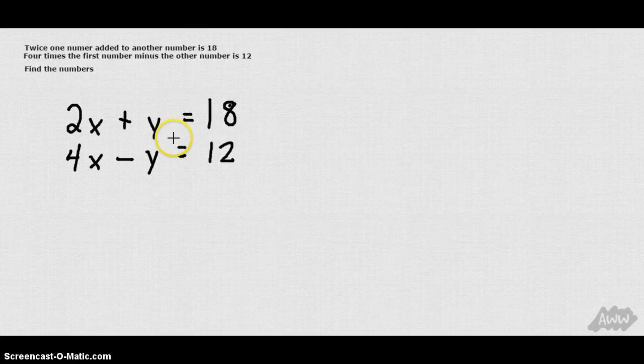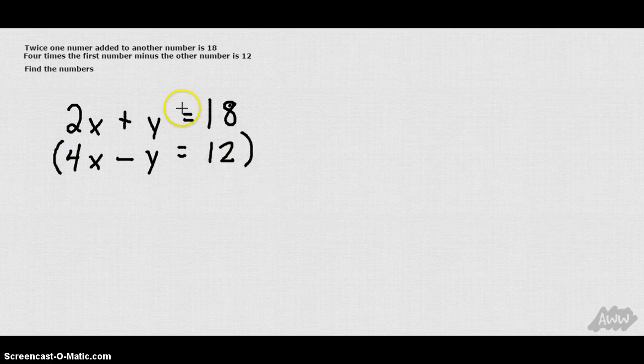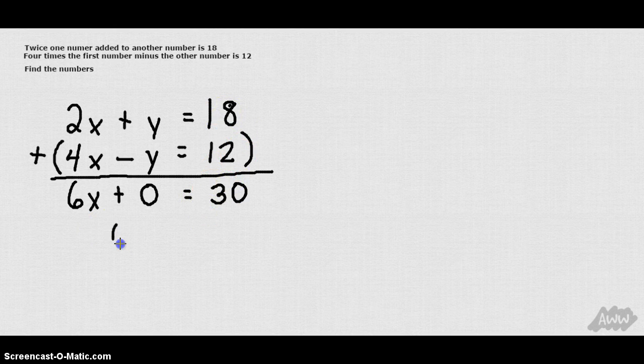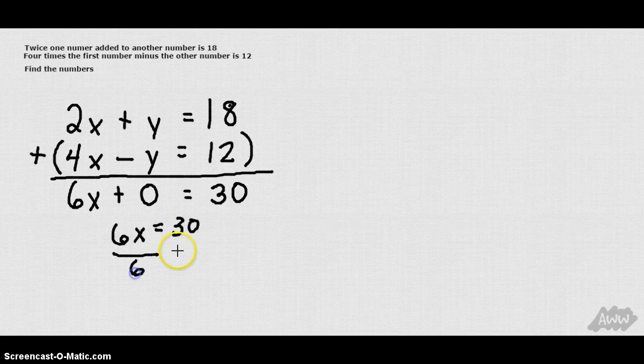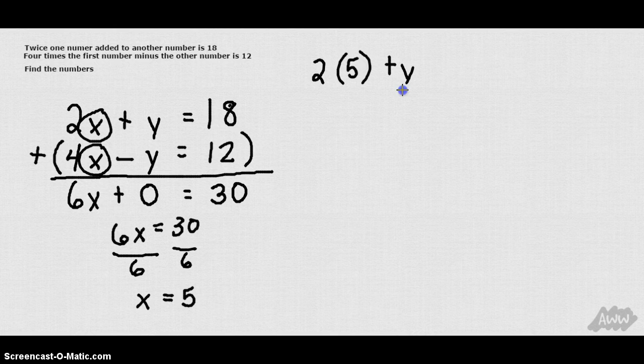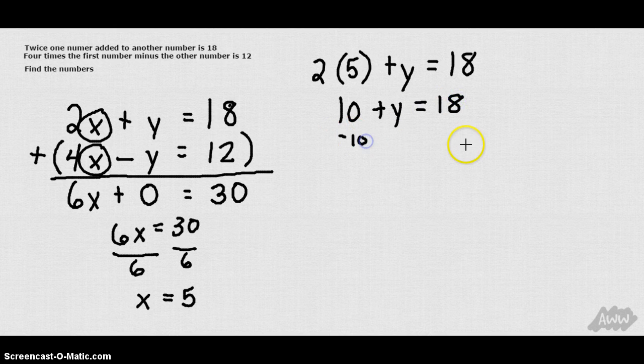I notice 2x and 4x aren't going to cancel out. But y and negative y will cancel out if I add these equations together. So I can take 2x plus 4x and I'll get 6x. I can take positive y, add it to negative y, and I get 0. If I take 18 and add it to 12, I get 30. So I have 6x equals 30. Divide both sides by 6. I get x equals 5. I can plug that x into either x up here. 2 times 5 plus y equals 18. So 10 plus y equals 18. Subtract 10 from both sides to get y by itself. y equals 8. I have a coordinate at 5, 8.